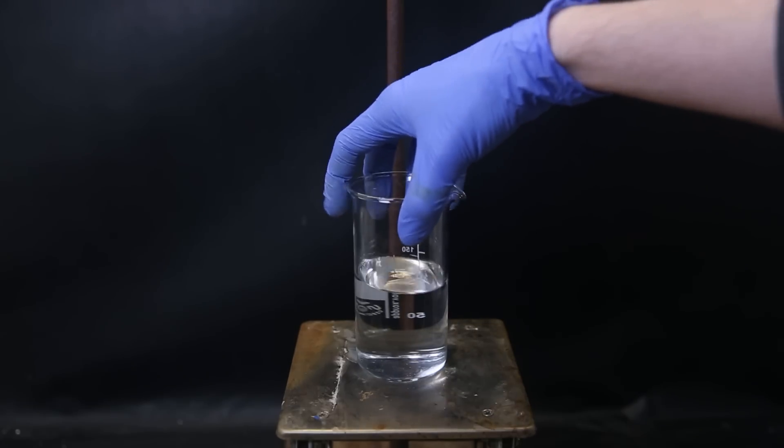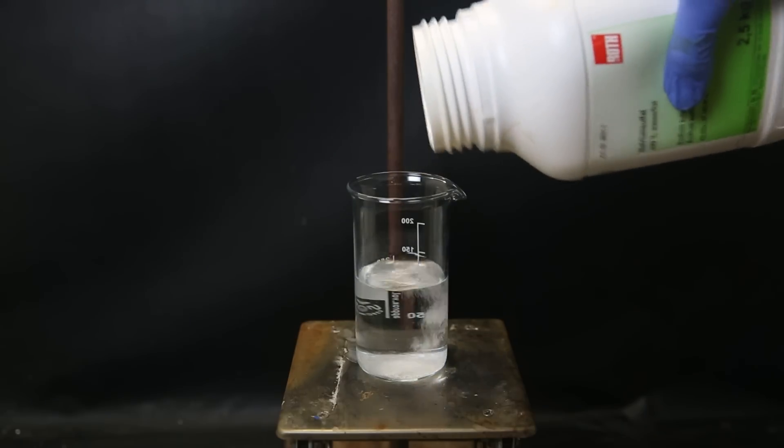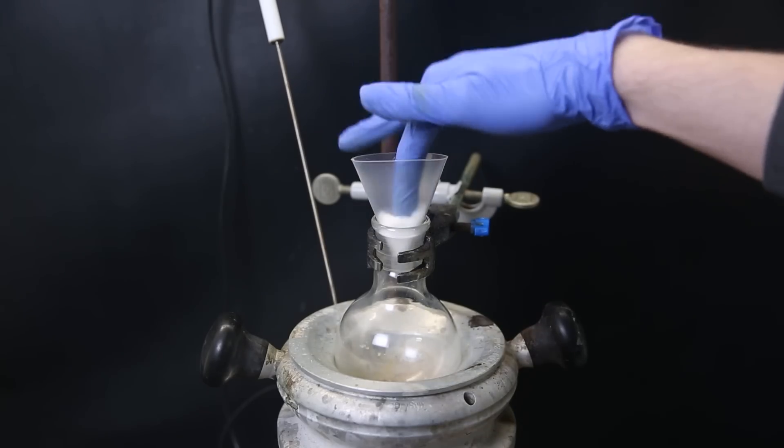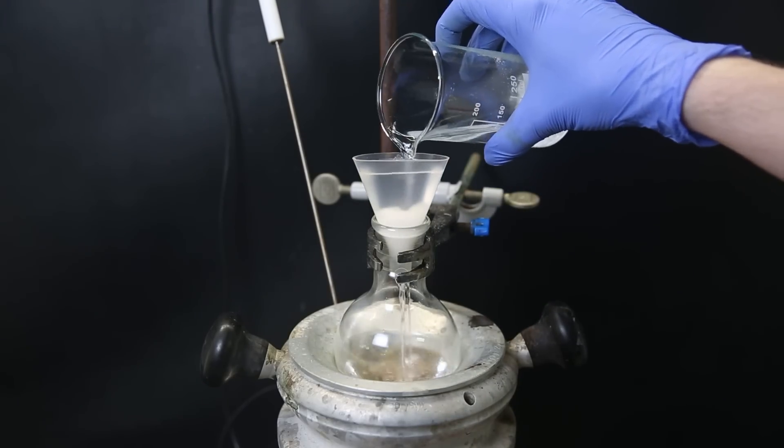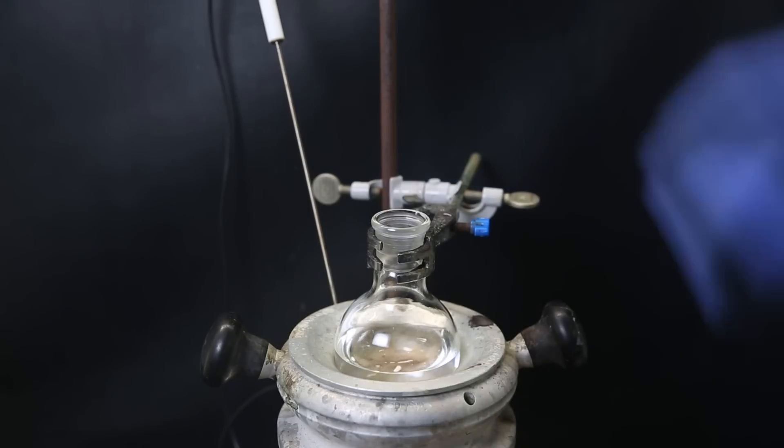Now I have the combined ether extracts that should contain the benzaldehyde, to which I add some sodium sulfate again to absorb remaining droplets of water. I again set up a flask in a heating mantle with a funnel that I plug with some cotton and filter all of the ether through.